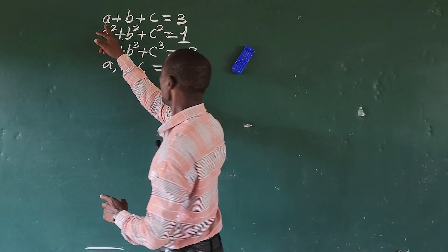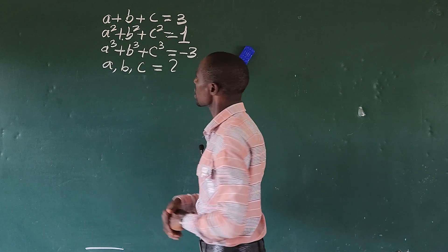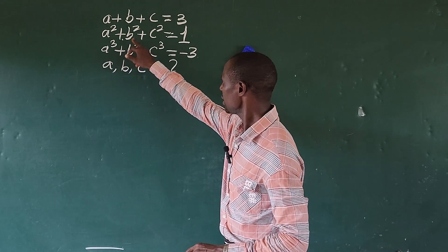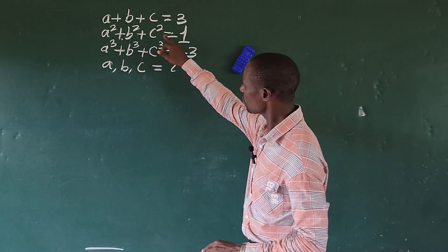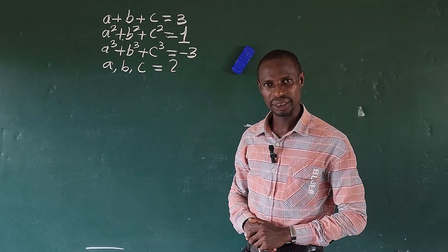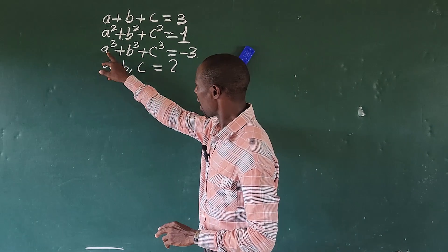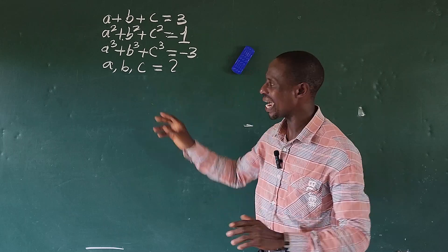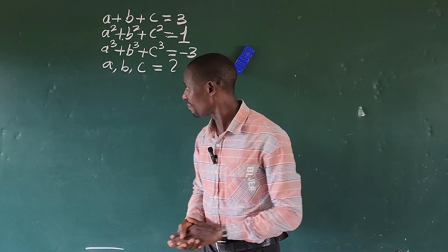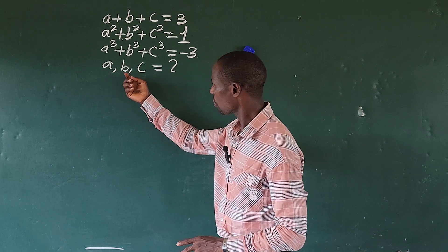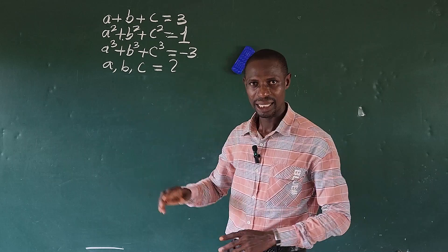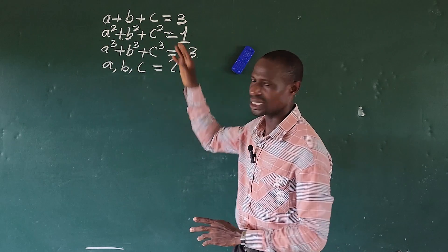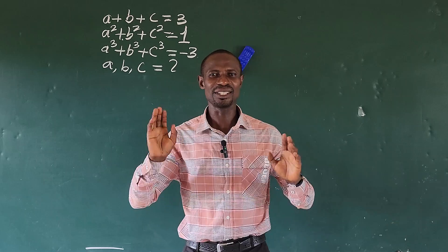The question reads: a plus b plus c equals 3. a squared plus b squared plus c squared equals 1. And again, we have a cubed plus b cubed plus c cubed equal to minus 3. What is the value of a, b, c that will satisfy these three equations?